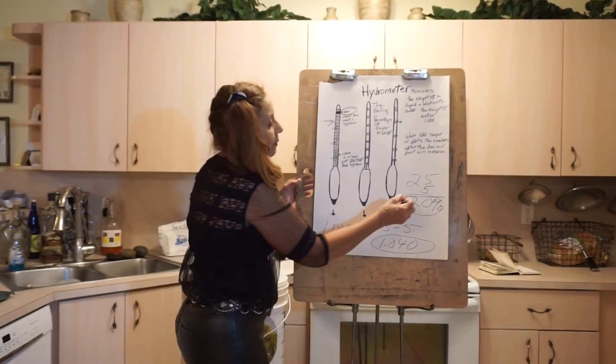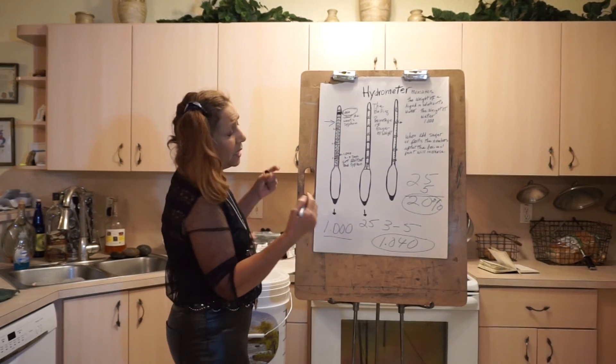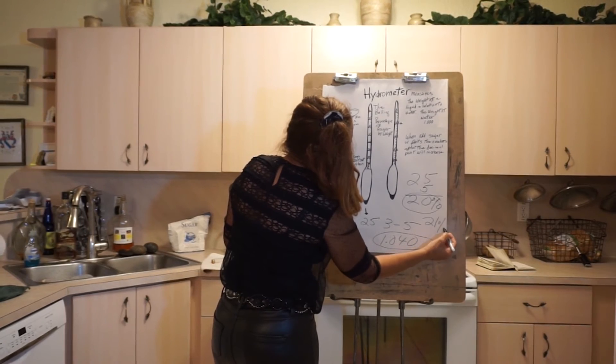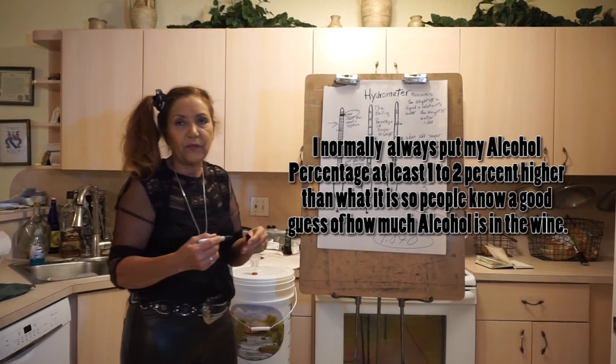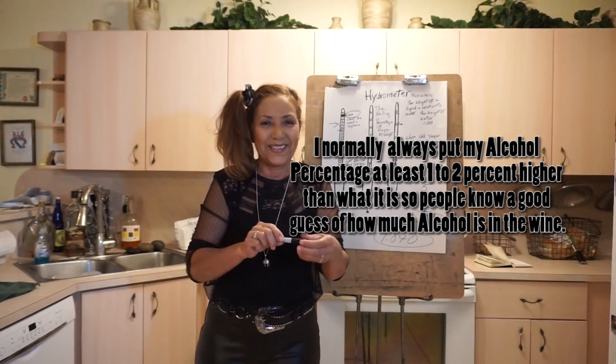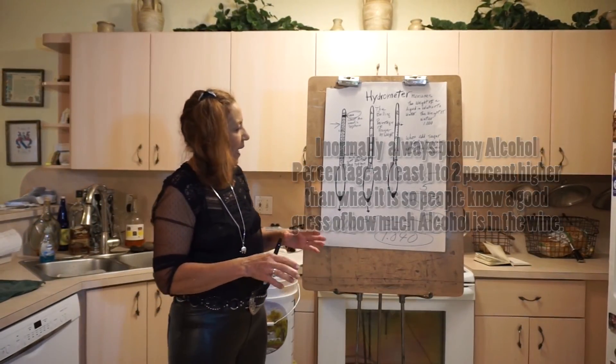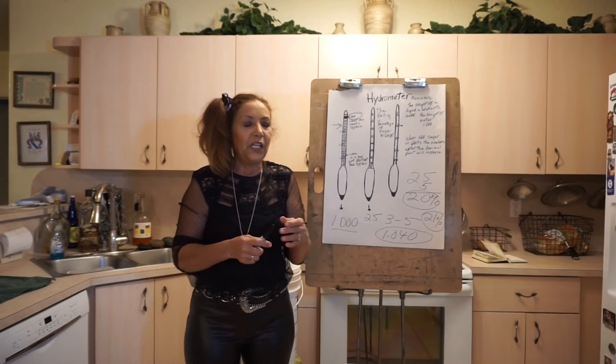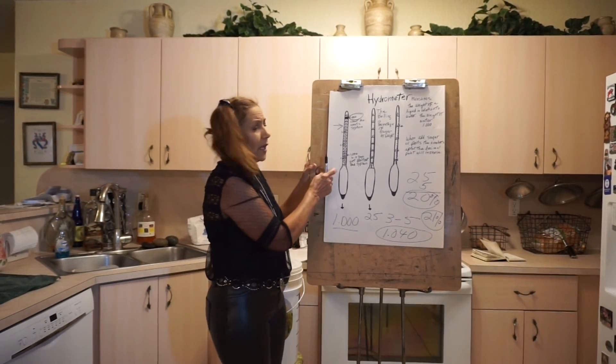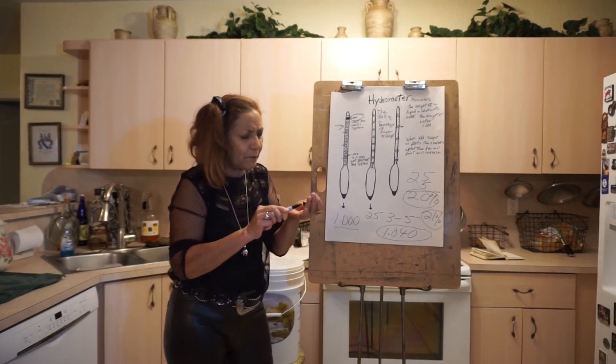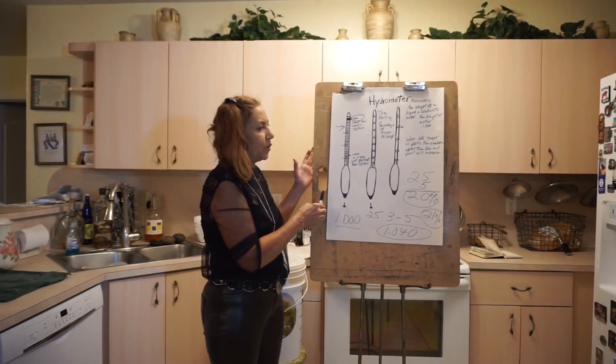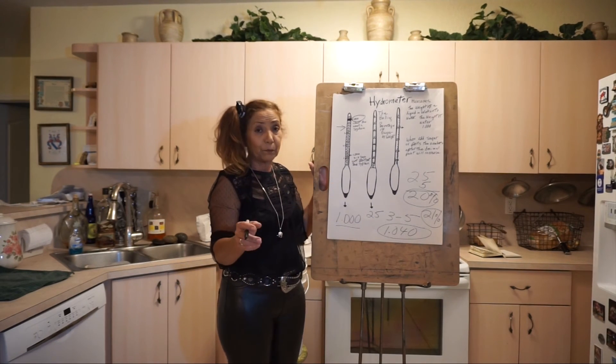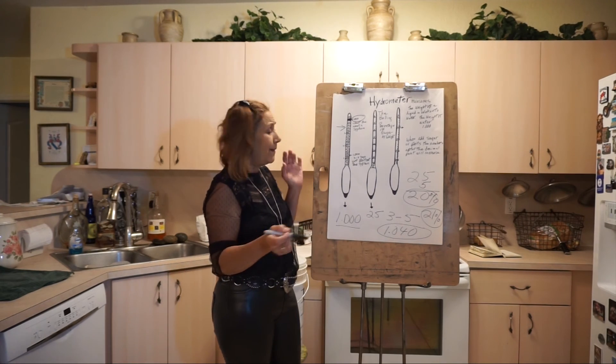This is an approximate measurement. So if you got 20%, I would put on the bottle that I have 21%, so when you're serving your wine people don't get overconfident and drink too much. When you buy your hydrometer it comes with instructions with a very long process checking temperature and other things. The way I'm teaching you is the simplest way to make wine.